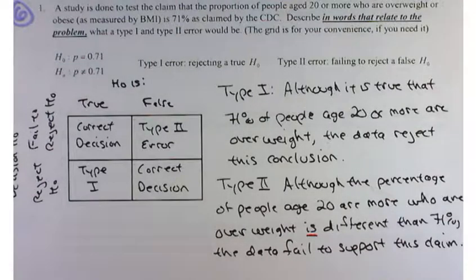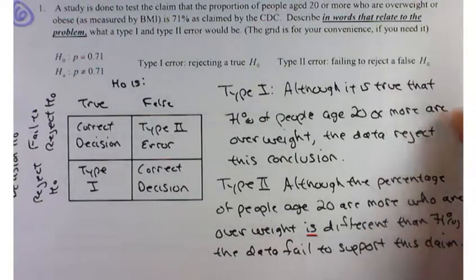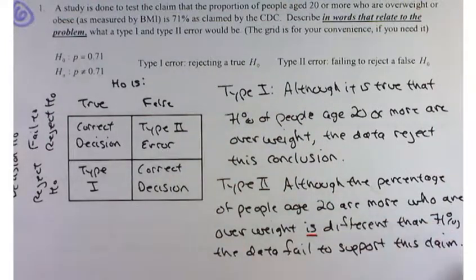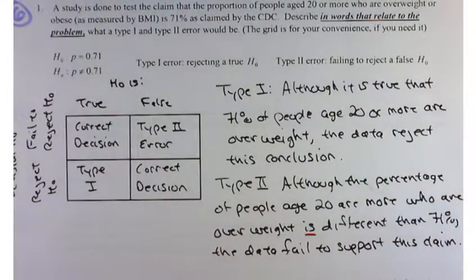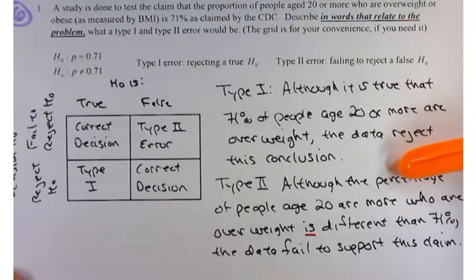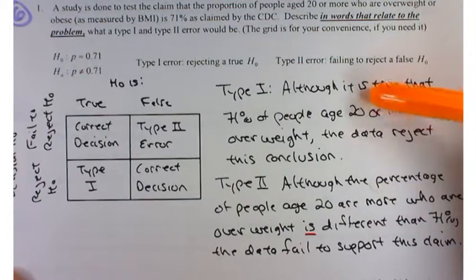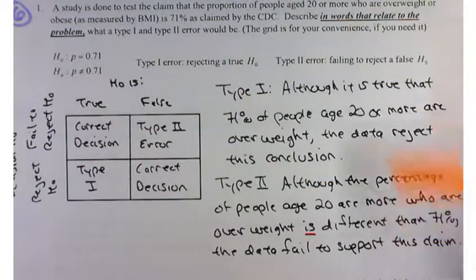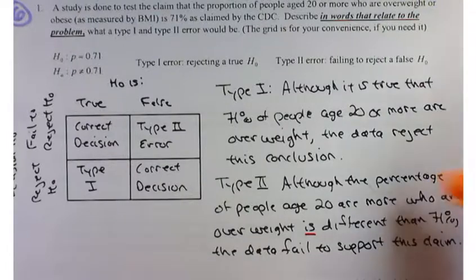In a type 1 error, in a type 2 error, when I ask you to describe it in words related to the problem, what I'm looking for is for you to state what is true and what you concluded. That way, you can see the difference between the two, see that there's a contrast, and see that what's true is different than what you concluded, so that you've made an error.